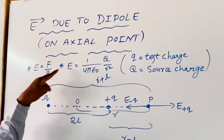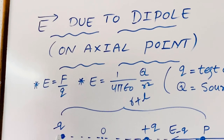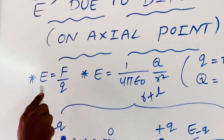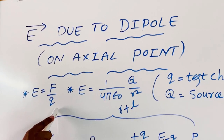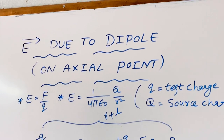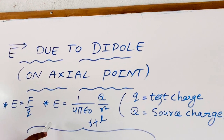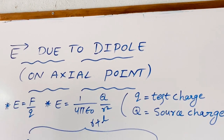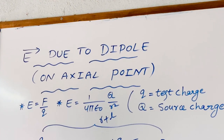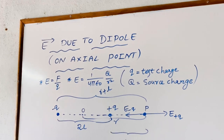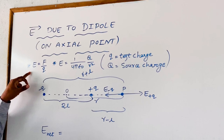These two formulas we can use in order to calculate the electric field. First of all, if you know the test charge, you can calculate the electric field with the help of this formula: E is equal to F by Q, where F is the force experienced by the test charge. Similarly, if you know the source charge magnitude, we can use this formula: E is equal to 1 by 4 pi epsilon 0 into Q by R square.